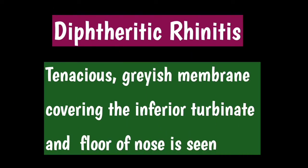In diphtheritic rhinitis, a tenacious grayish membrane covering the inferior turbinate and floor of the nose is seen. It is a rare condition but may be primary or secondary to pharyngeal diphtheria, and may occur in acute or chronic form. Excoriation of the anterior nares and upper lip may be seen. Treatment involves isolation of the patient, systemic antibiotics such as benzyl penicillin injection, and diphtheria antitoxin.